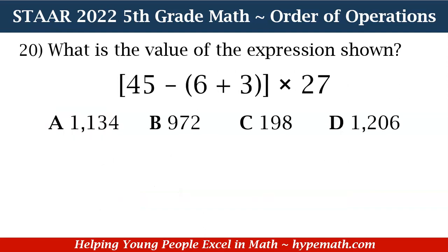Now let's move to question number 20: what is the value of the expression shown? In brackets, we have 45 minus, then in parentheses 6 plus 3, close parentheses, times 27. Is the correct answer A: 1,134; B: 972; C: 198; or D: 1,206?